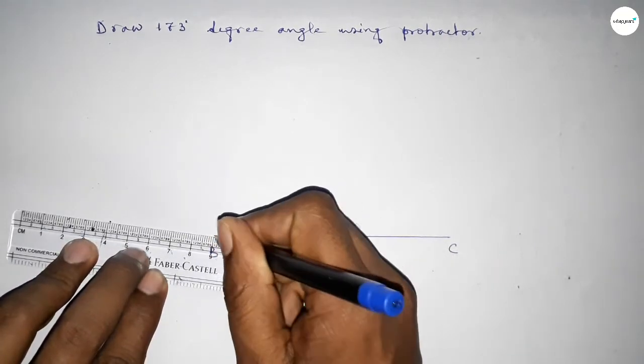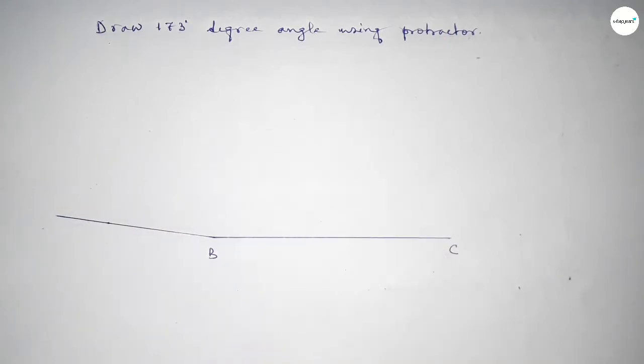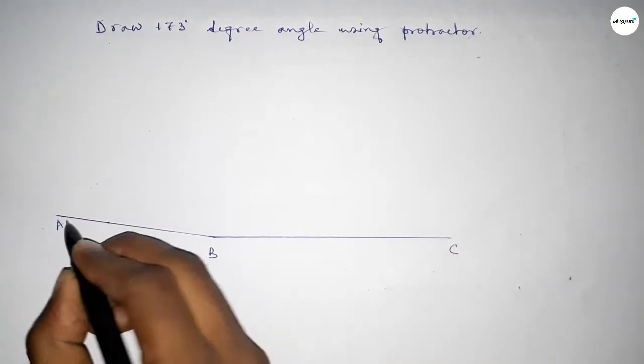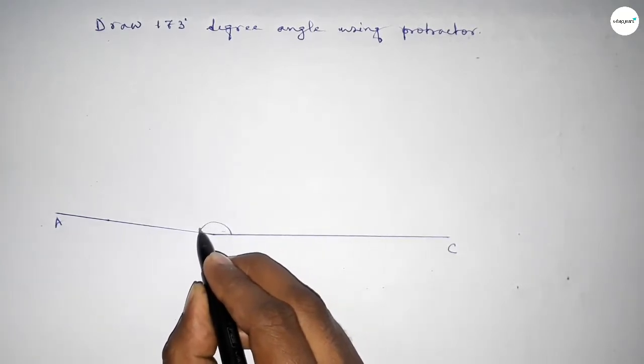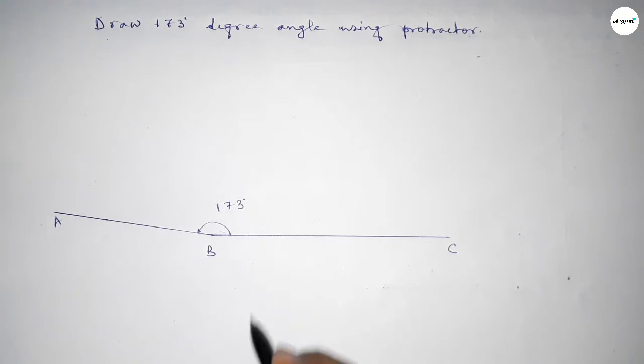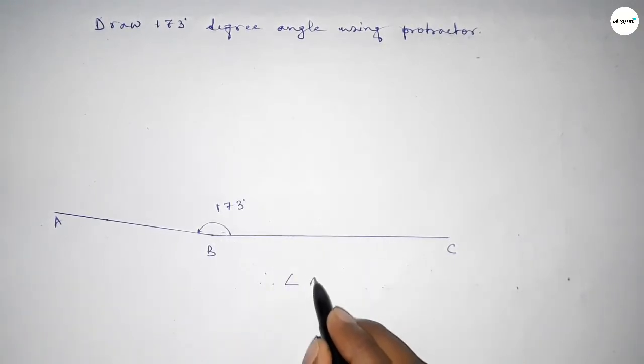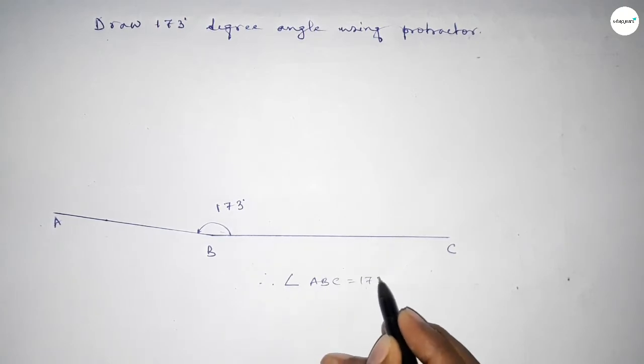So joining this side and taking here a point A. So angle ABC up to this is 173 degree angle. Therefore angle ABC equals 173 degrees.